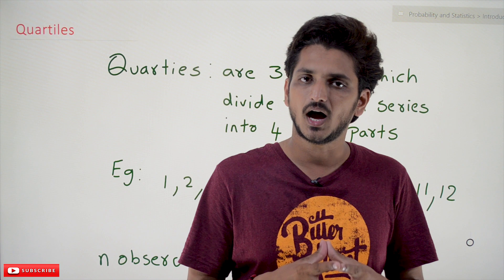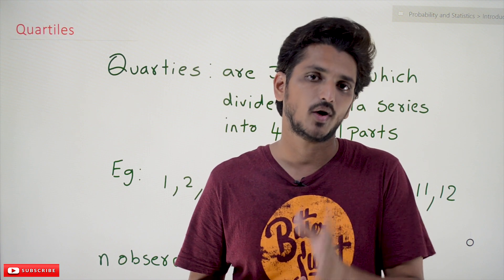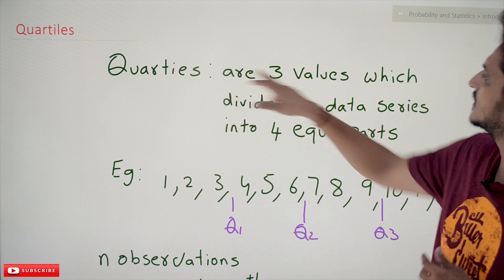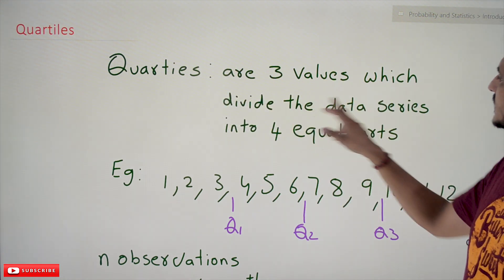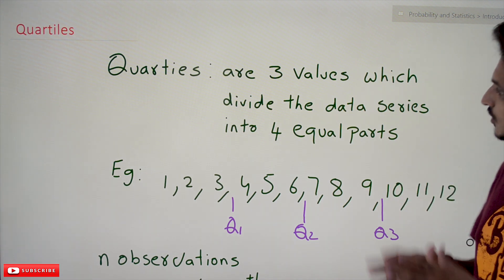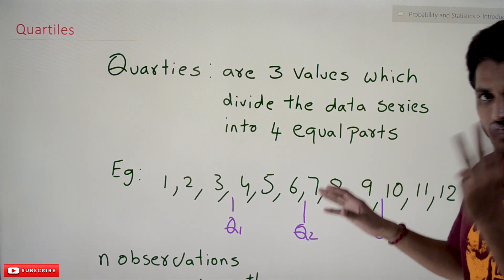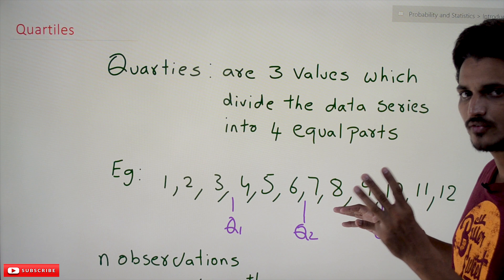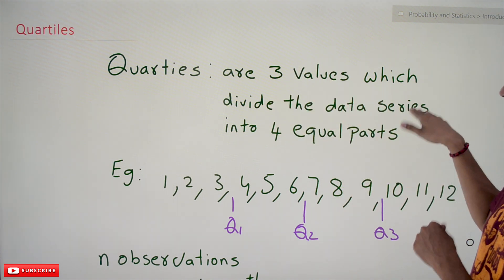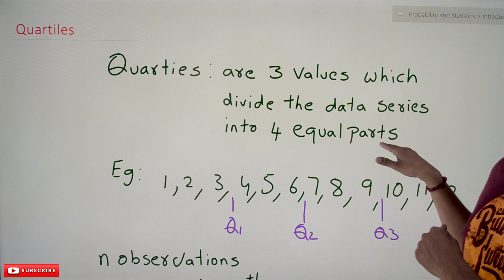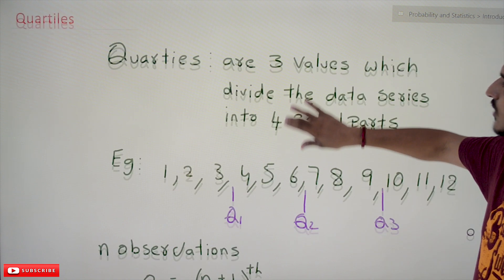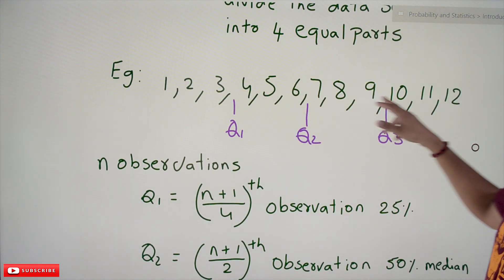Coming to today's class: first we will understand how to calculate the quartile points, then we are going to understand what's the use of these quartile points. Quartiles are three values which divide the data series into four equal parts. We have to identify three different values that divide our data series into four equal parts — we call them quartile points. Let's try to understand with an example: 1, 2, 3, 4, 5, 6, 7, 8 — this is our data series.